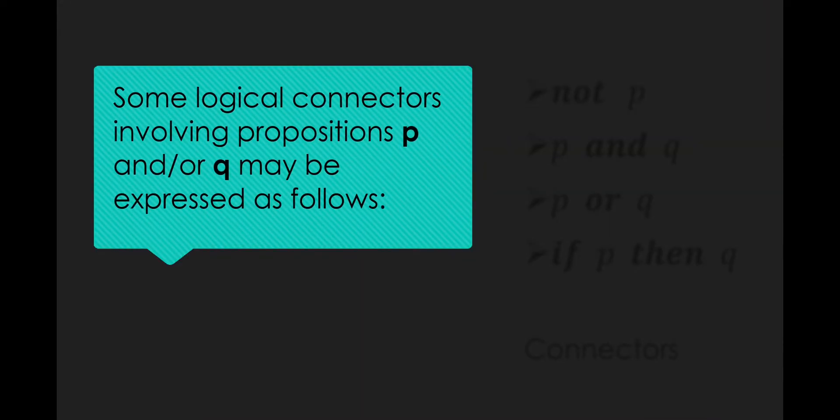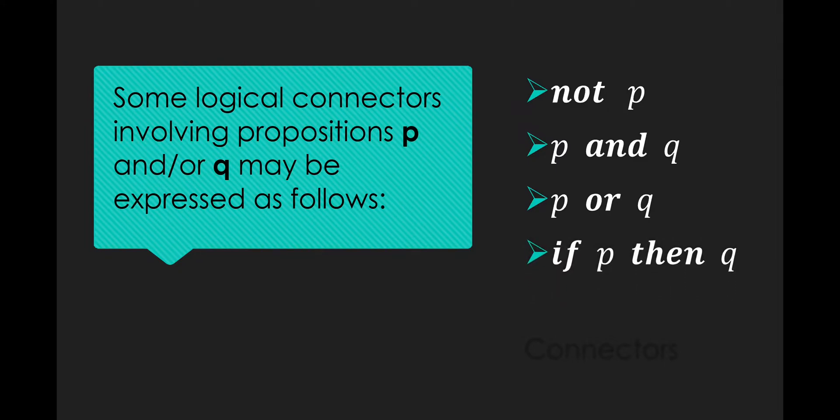Some logical connectors involving propositions P and Q may be expressed as follows: not P, P and Q, P or Q, if P then Q. Therefore, the connectors used here are not, and, or, if, and then. These are the connectors used to connect more than one proposition.